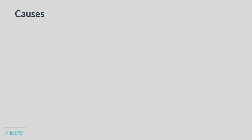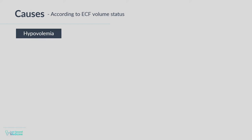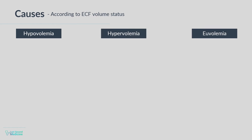Many causes can lead to hyponatremia, and a patient can have multiple causes at the same time. To make things easy, causes of hyponatremia are best categorized according to extracellular fluid or ECF volume status. There are three possible volume statuses: hypovolemia, euvolemia, or hypervolemia. And the patient with hyponatremia will have at least one of these three statuses.